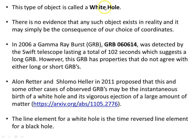This type of object is called a white hole. There is no evidence that any such object exists in reality, and it may simply be a consequence of our choice of coordinates — just as the Schwarzschild coordinate singularity at the Schwarzschild radius is not physical but due to coordinate choice. Or maybe the white hole is nothing more than a mathematical artifact of coordinate choice.